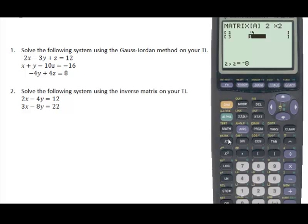I'm going to go second matrix to get back here because I want to now edit B. And B is 2 rows by 1 column, which should be the constants. So 12 and 22.